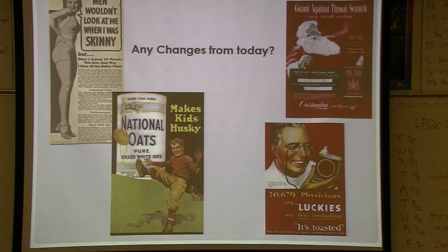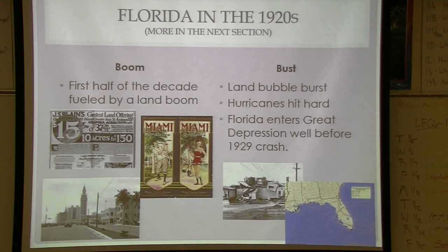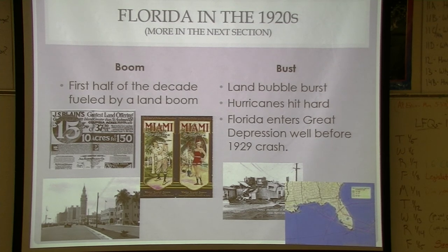In Florida, a land boom began during and after World War I and really took off in the 1920s. Speculation had people buying land sight unseen. What's called a bubble eventually bursts — whoever holds the paper last loses. Florida's land bubble began bursting around 1926, and then devastating hurricanes hit in 1926 and 1928, some of the worst in Florida history. So just as farmers were in the Great Depression before the 1929 stock market crash, Florida was already in economic depression well before that date.